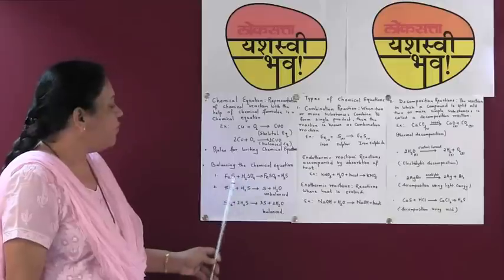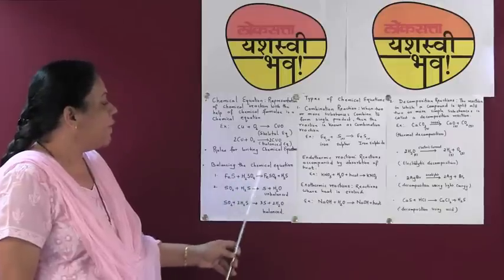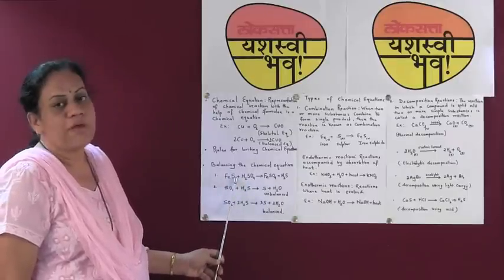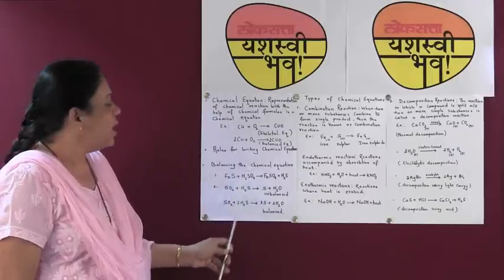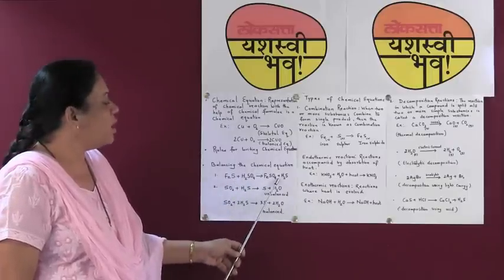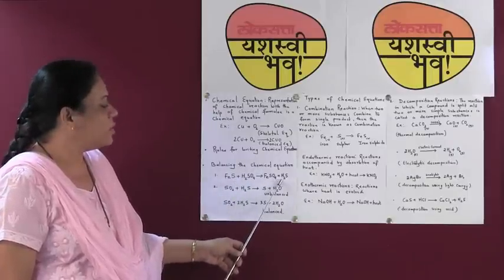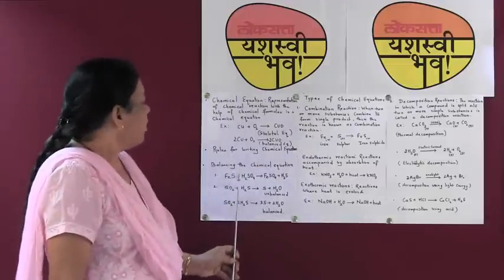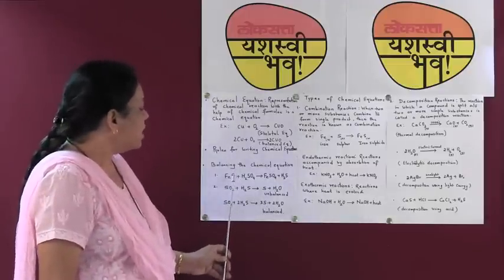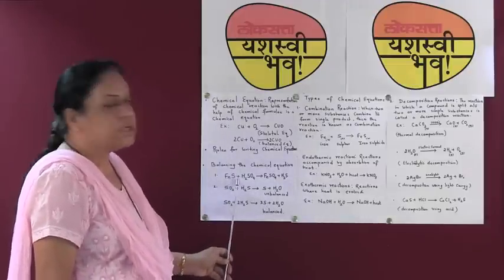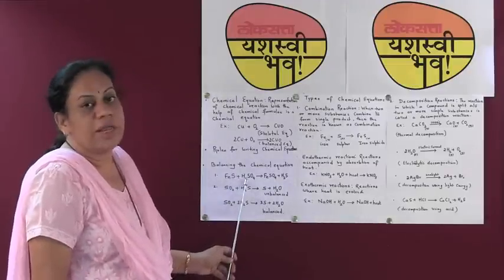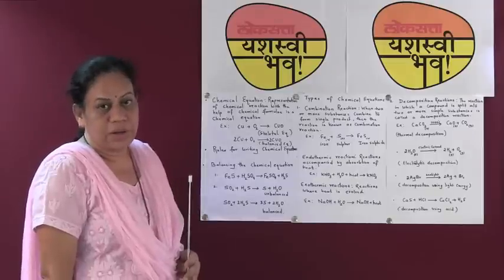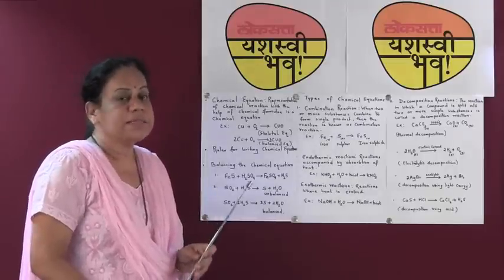With that we can say that the number of atoms on the left hand side is equal to the number of atoms on the right hand side. This means the first equation is already a balanced equation.